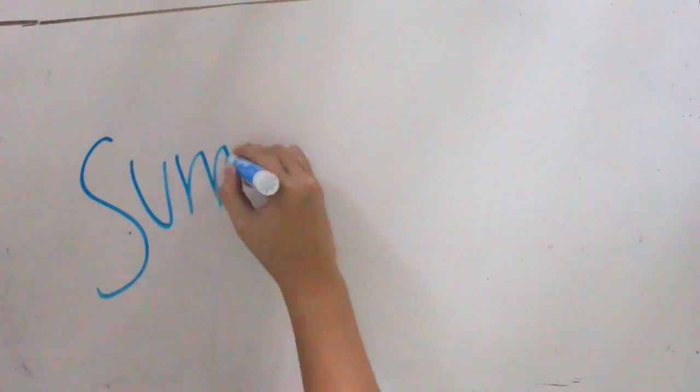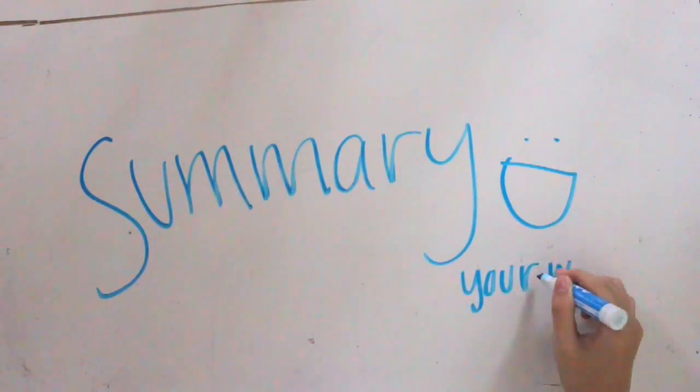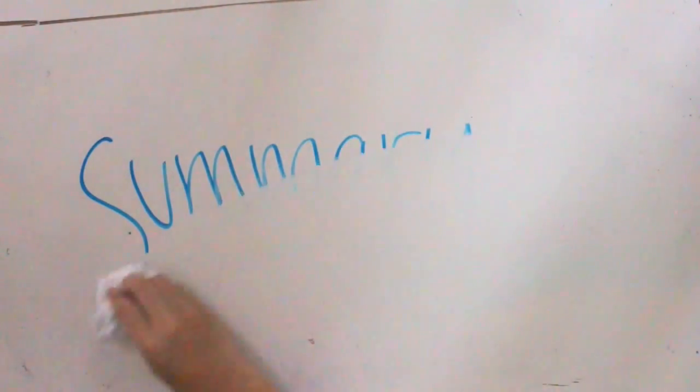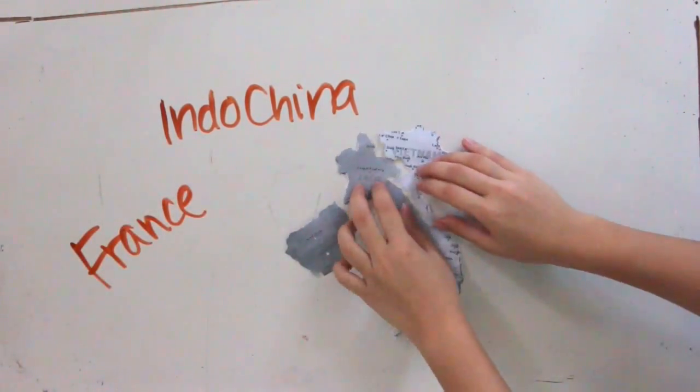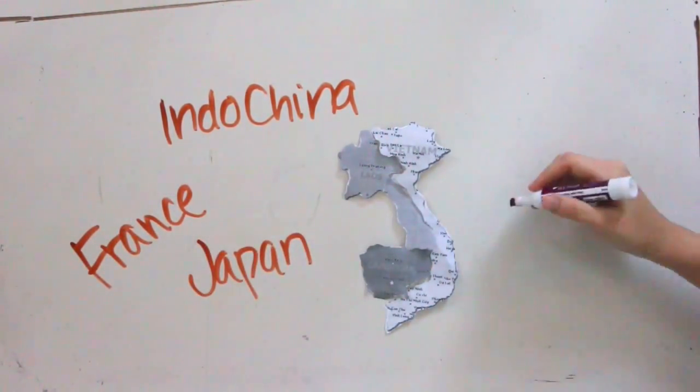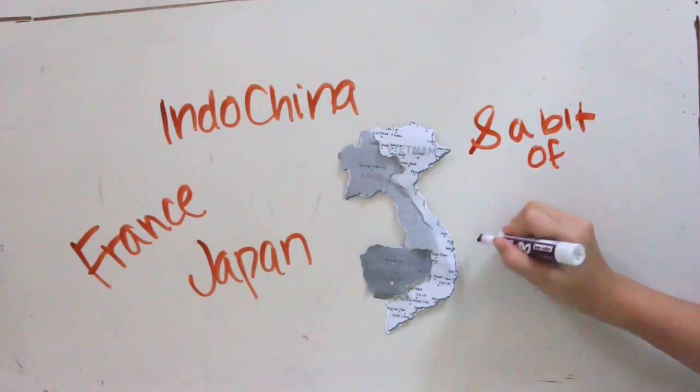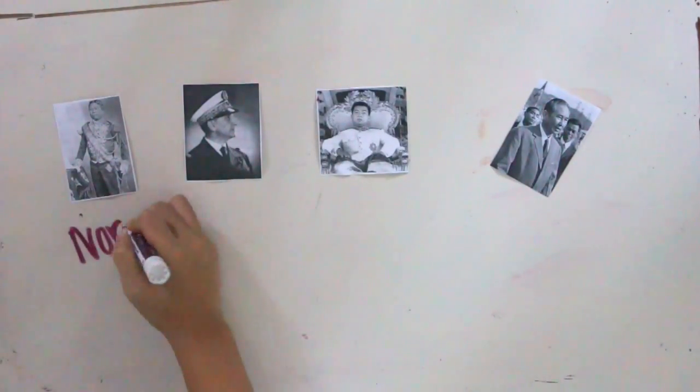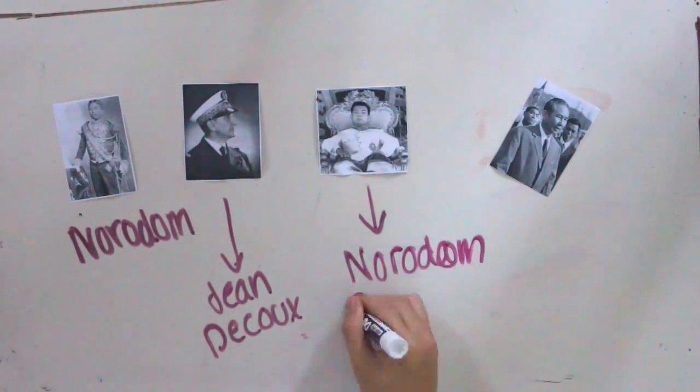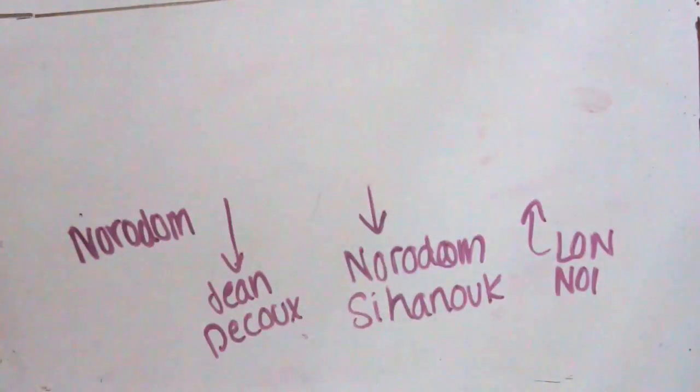What was involved? Summary time, because just in case you didn't listen. So who was involved? Indochina, which included Laos, Vietnam, and Cambodia. And of course, France, Japan, and a bit of the US and Canada were involved. And the main people involved were King Norodom, Jean Decoux, Norodom Sihanouk, and Lenore.